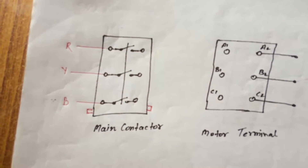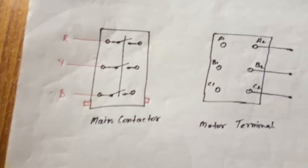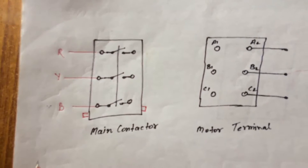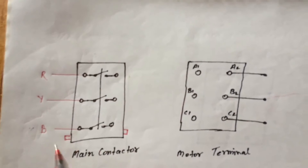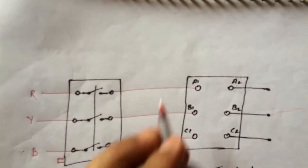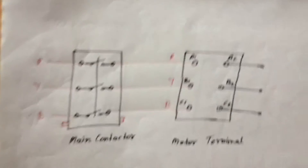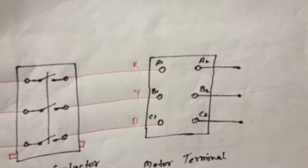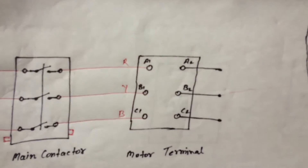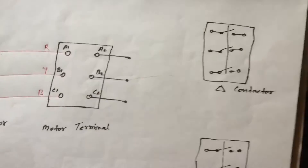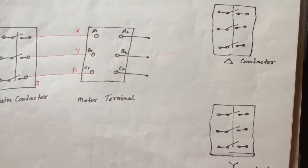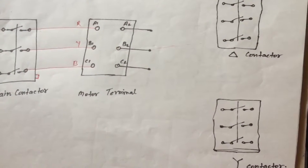We will discuss how you can activate the electromagnets in a later part. Now, since the three phases are already been fed to the main contactor, let's supply them to the motor. The motor has six terminals as I said earlier: A1, B1, C1, A2, B2, C2. Now, here is the main part. First, we know that the motor is going to run in star connection, so let's do it.